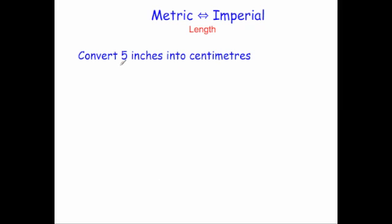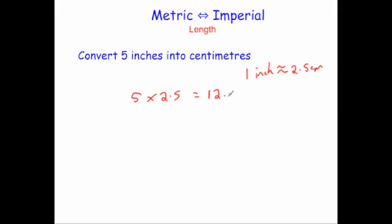The first question says: convert 5 inches into centimeters. Remember that 1 inch is approximately equal to 2.5 centimeters, so to convert from inches to centimeters you times by 2.5. We do 5 times 2.5: 5 times 2 is 10, and 5 times a half is 2.5, giving 12.5 centimeters. So 5 inches is approximately equal to 12.5 centimeters.